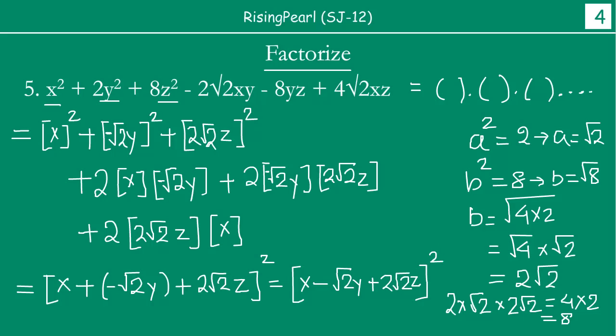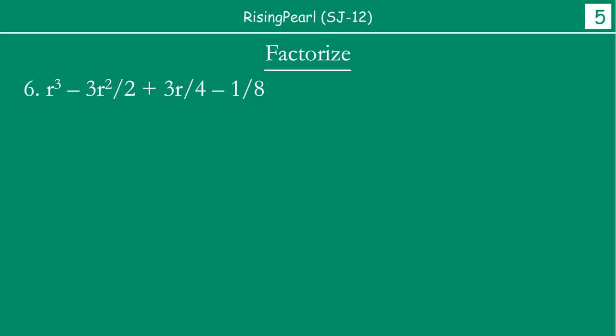So, friends, this was a little bit difficult at the start, but step by step we realized which identity was applicable, how to identify positive and negative terms, and we could find out the two factors. We have taken many examples with 2 or 3 variables where the maximum power was 2. Now we are going to talk about something where the maximum power is 3.